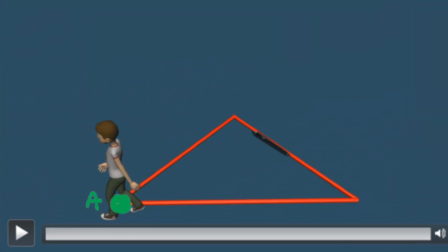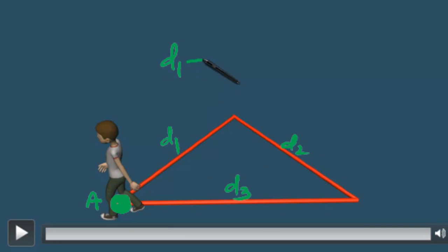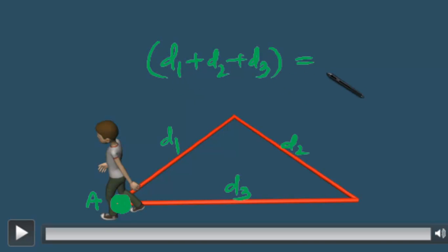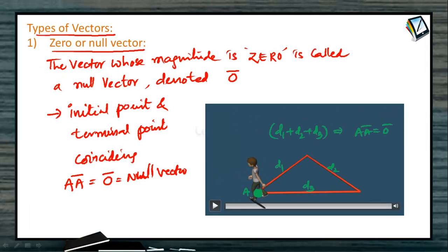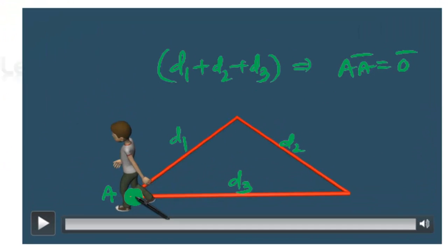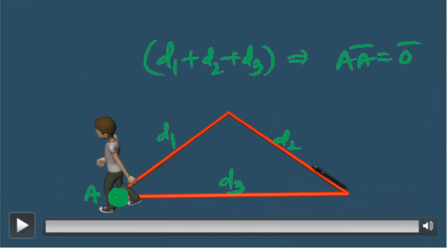Even though he travelled this much distance — say d1, d2, and d3 — he travelled a total distance of d1 plus d2 plus d3. But vector AA bar is equal to zero bar. So what we can say is simply, it is a triangle. In a triangle, if you start moving from one vertex to another, then to the third, and back to the previous one, then in triangle ABC the displacement is a null vector.